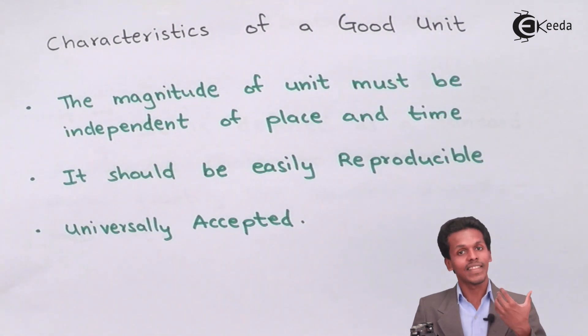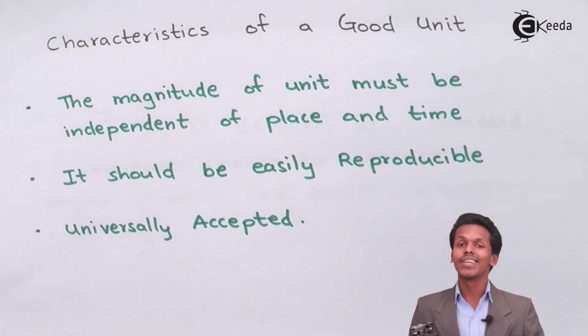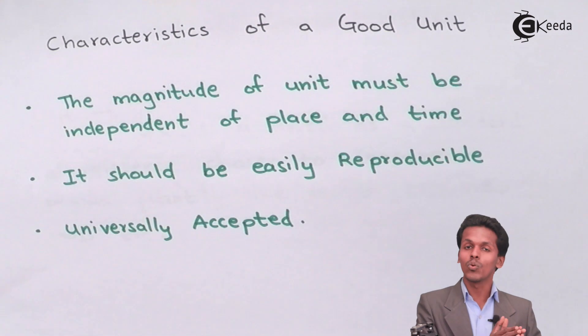Suppose if you are taking one kg of a copper substance which is present in a particular city and you have moved to another city, in that case also you have to measure the particular unit in kg itself and that should be of one kg only. So the magnitude of a particular unit will not change regarding its place and time.